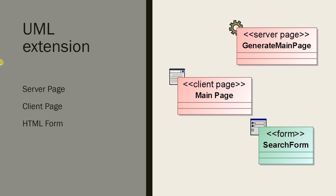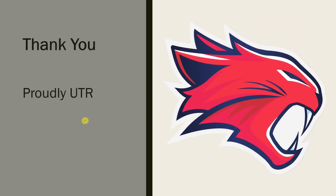The third element is the HTML form. A form instance represents an HTML form within a client page. It has no constraints, but it does have a tagged value: either GET or POST — the method used to submit data to the action URL. This has been a brief introduction to what we need to know about the web application extension for UML, covering how to represent web application components in UML modeling. Thank you for watching.